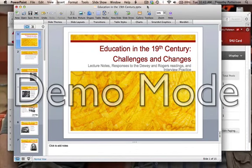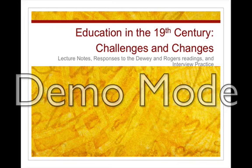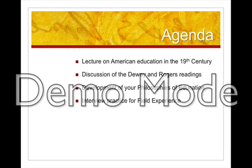This is the second lecture — the much longer lecture in this week's session. This lecture focuses on education in the 19th century in the United States: challenges and changes. The agenda includes talking about education in America from around 1800 to 1900, discussing the Dewey and Rogers readings, a brief explanation of where your philosophies of education stand right now, and a little activity to complete throughout the week and report back on.